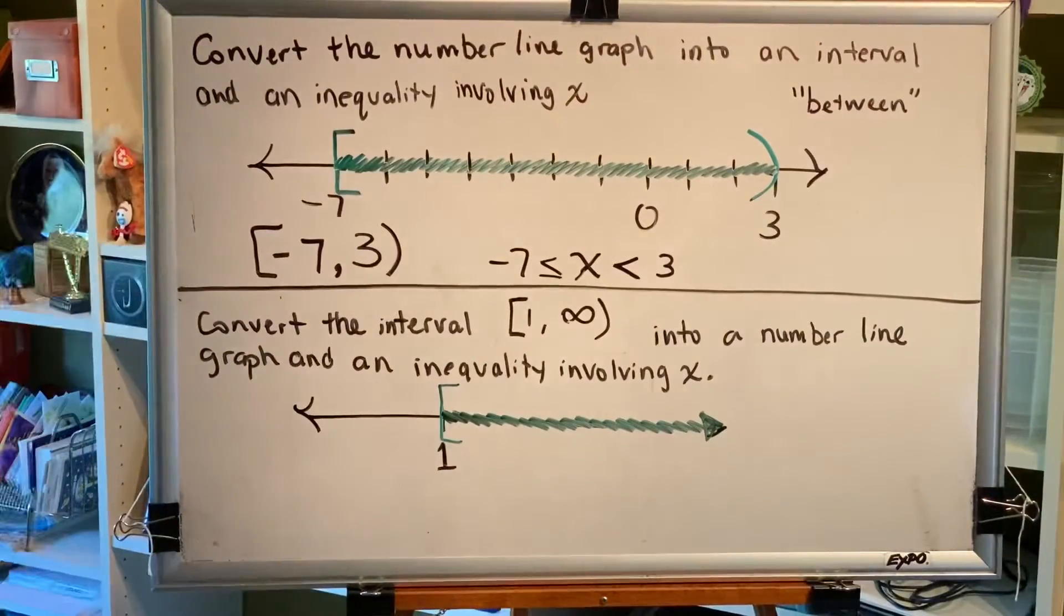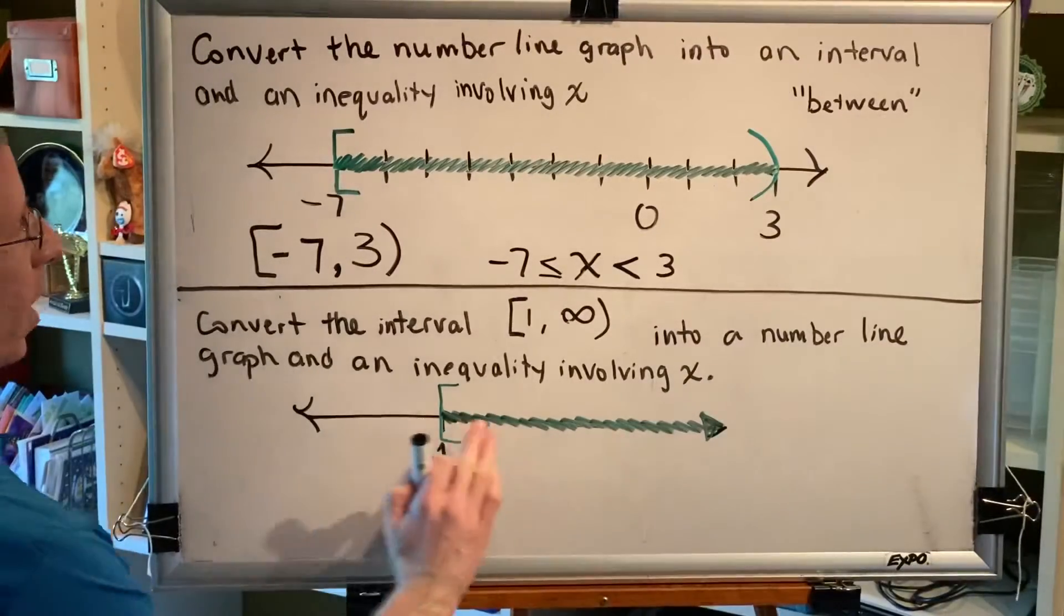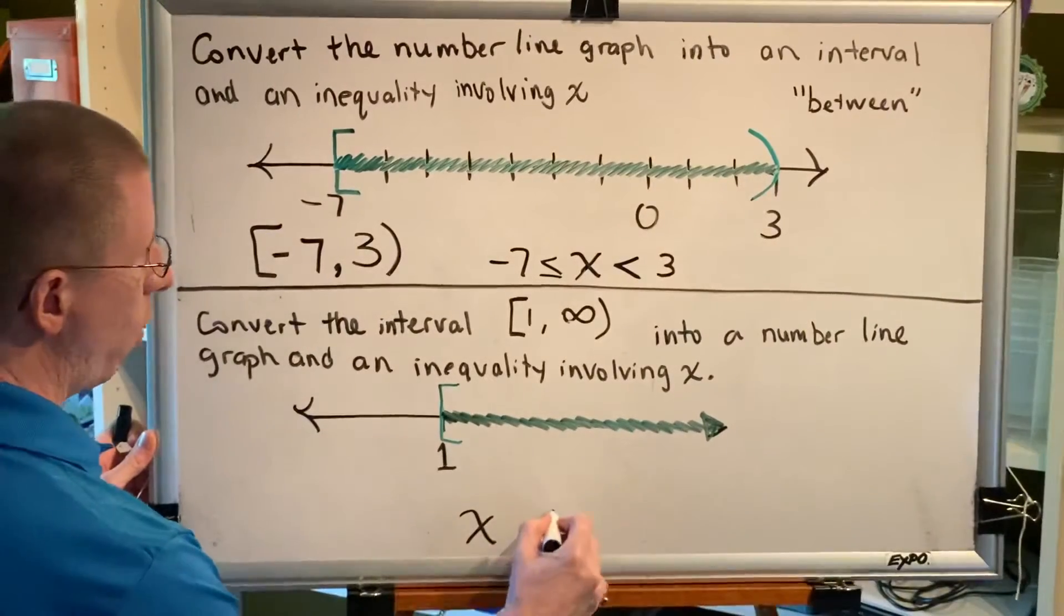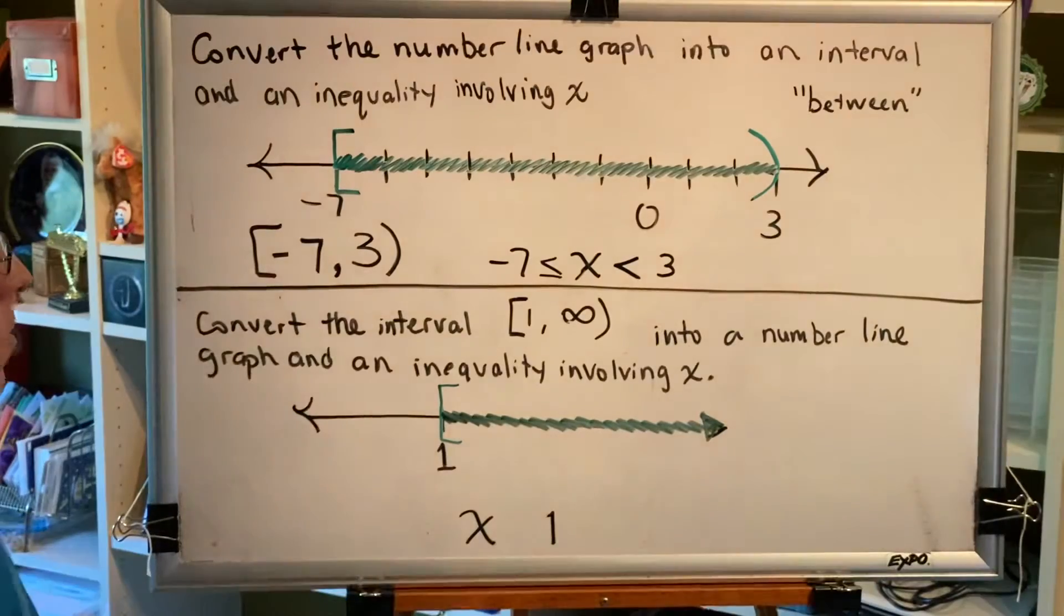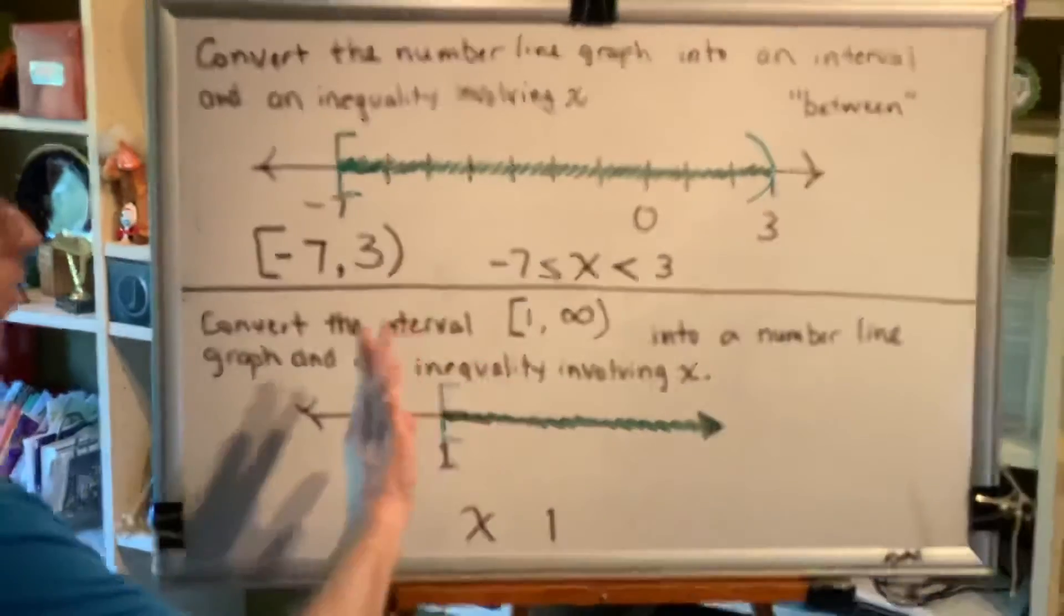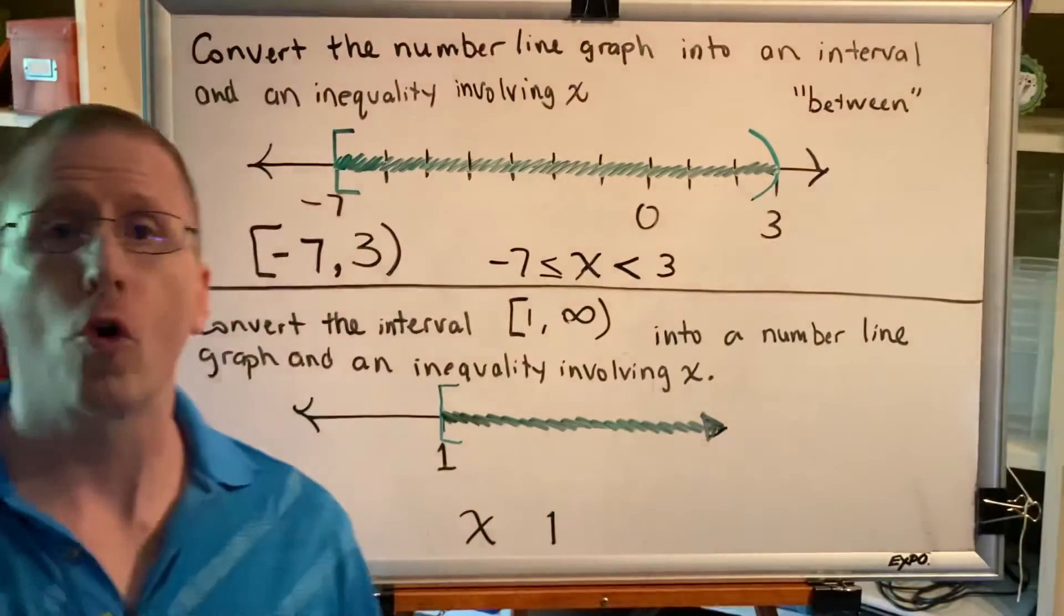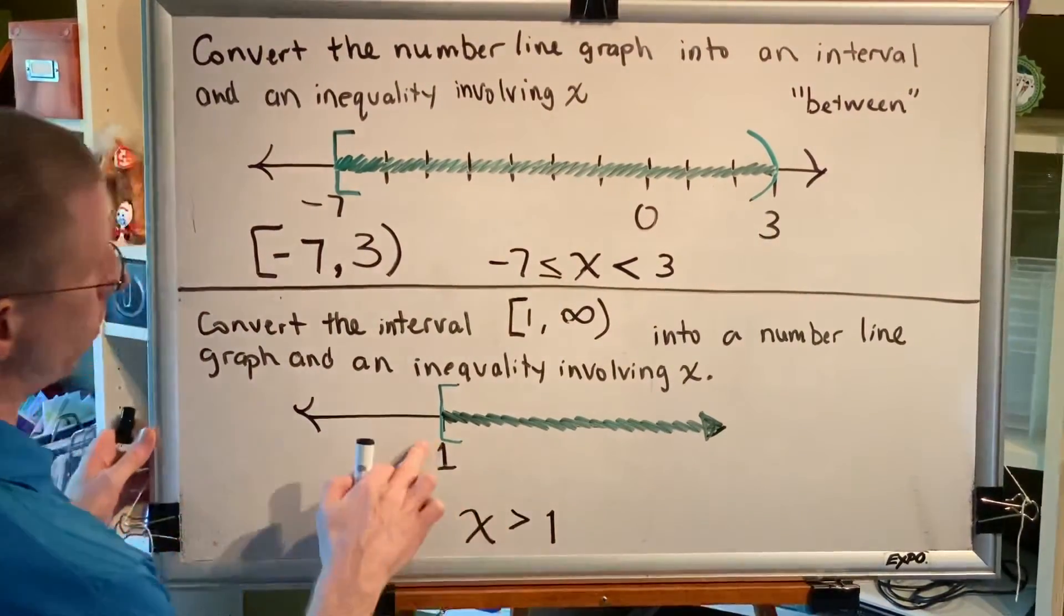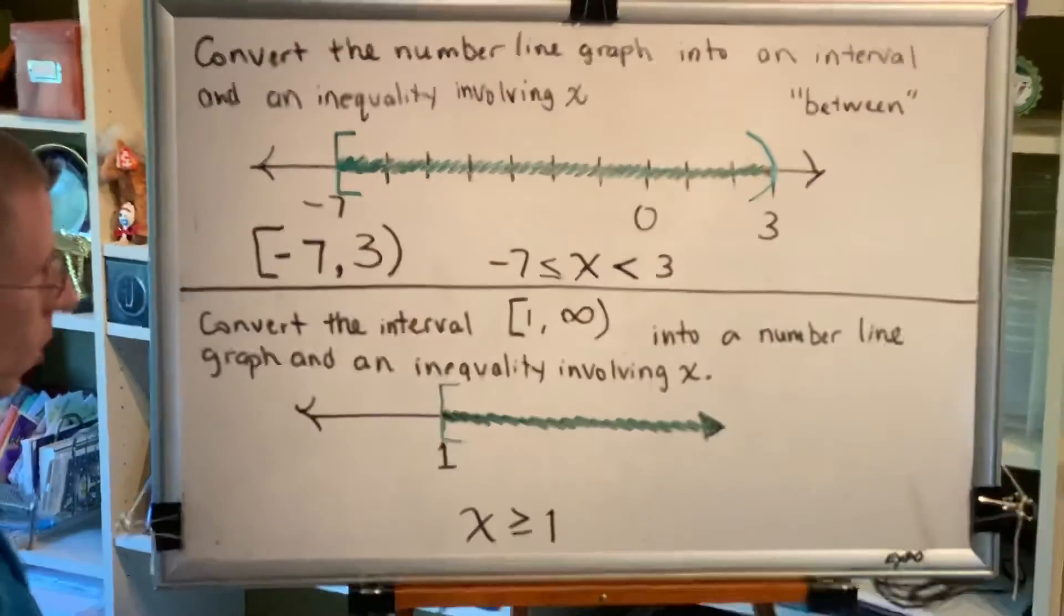Now we want to write our inequality. The dividing line between unshaded and shaded is one. So, we're going to write our inequality with an x and a one. Now to figure out the symbol that goes in between. The shading is to the right of one. Therefore, x is greater than one. And because it's a bracket, we'll actually change that to greater than or equal to.